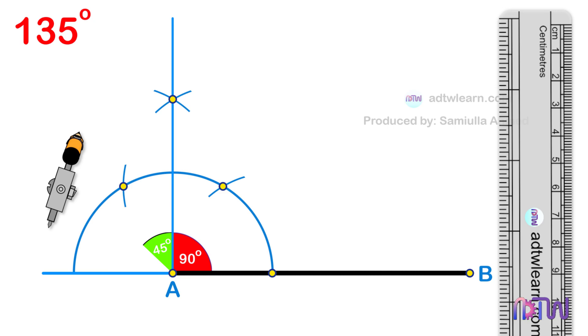Therefore, we need to divide this 90 degree angle in half. To do so, take a compass and using these two points as centers, cut arcs as shown.